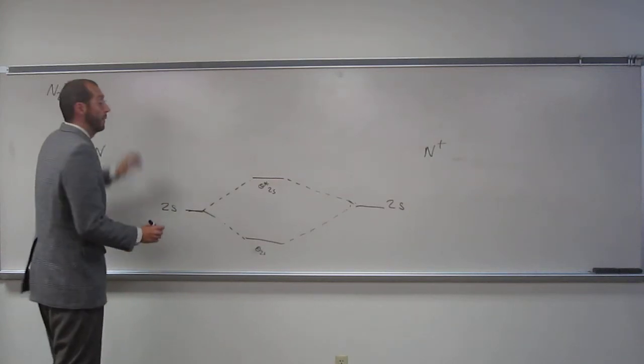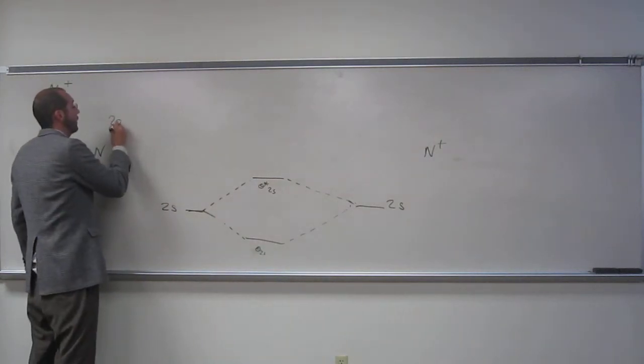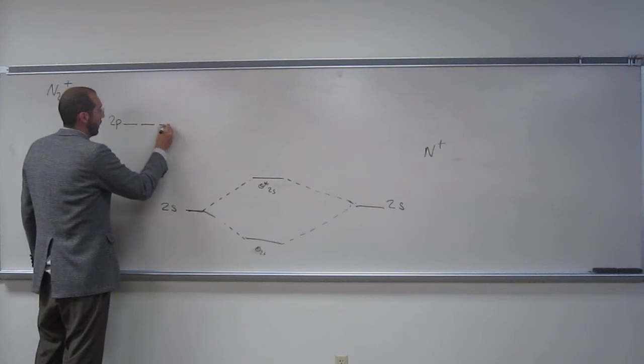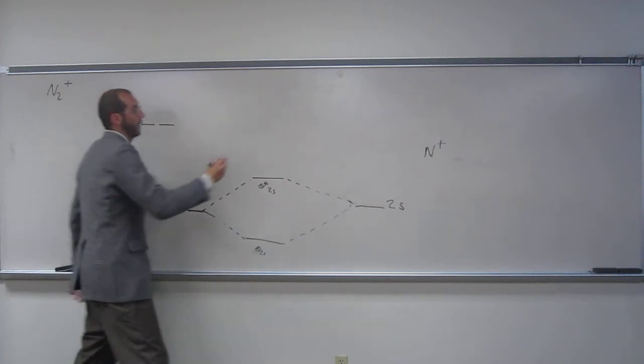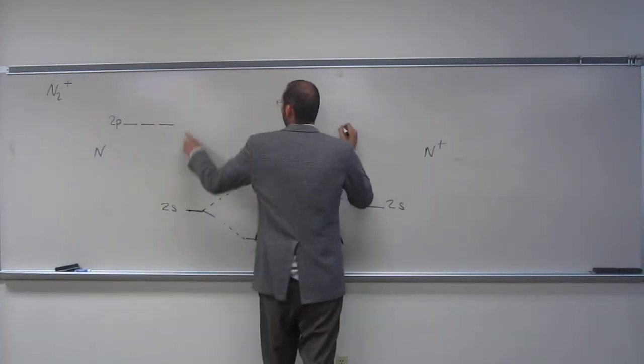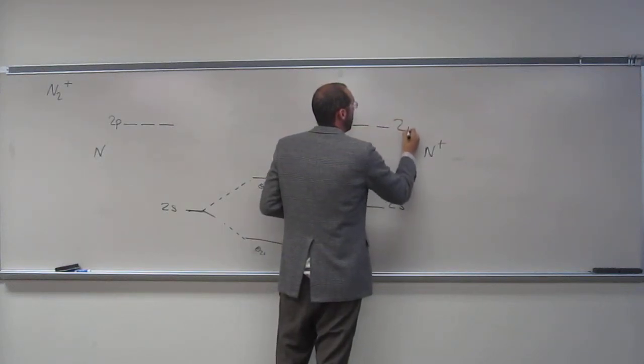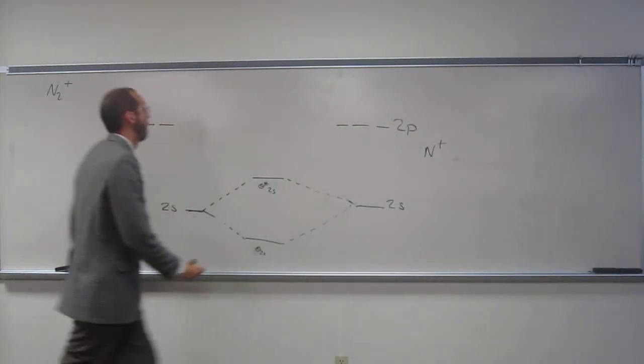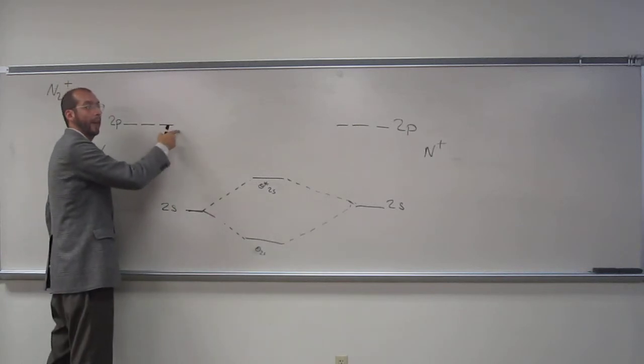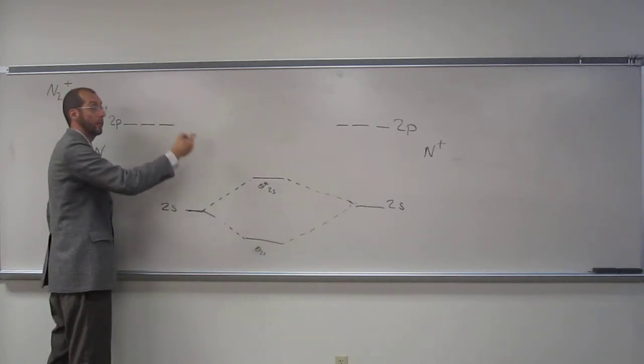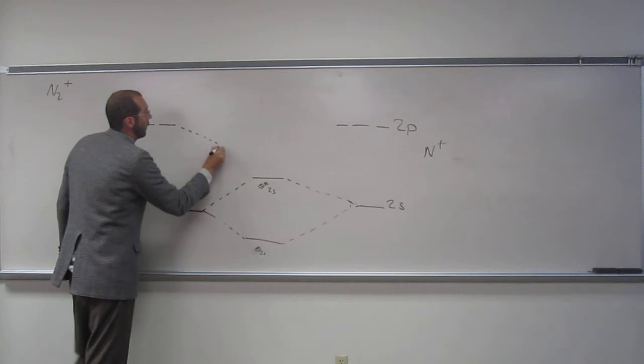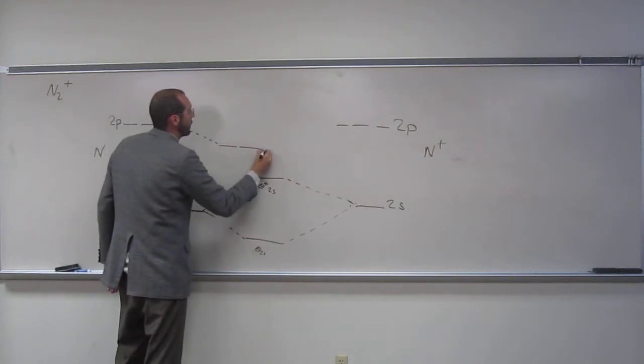Up here is where we have the weird stuff. So now we're doing the 2p orbitals: one, two, three like that. One, two, three, 2p. So what did we say? It makes the pi bonds first, these weird ones, so one, two.